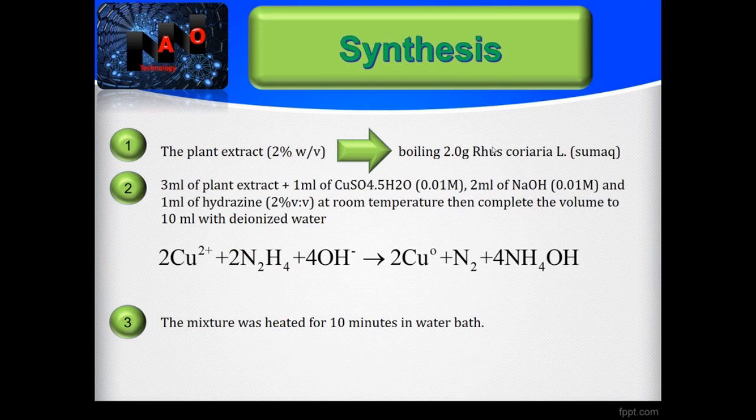The first step is preparation of Rhus coriaria or sumac extract. The plant extract was prepared by boiling 2 grams of dried well-grinded Rhus coriaria or sumac fruits for 20 minutes, filtering and completing to 100 milliliter of deionized water. The extract was stored at 4 degrees Celsius for further experiments.